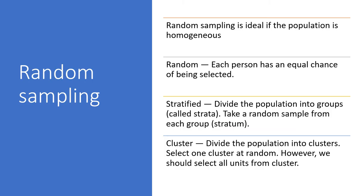The sample selected by research scholars may be random sampling or non-random sampling. Random sampling means each and every member of the population has an equal chance of being selected. Random sampling is mostly preferred in social science to avoid sampling biases, and it is ideal when the population is homogeneous. There are two main types: stratified random sampling and cluster sampling, which are mostly used by research scholars.